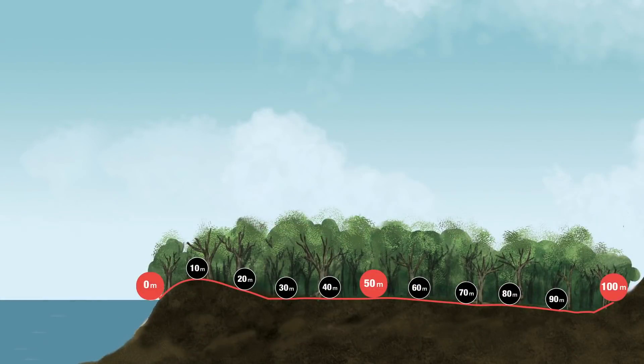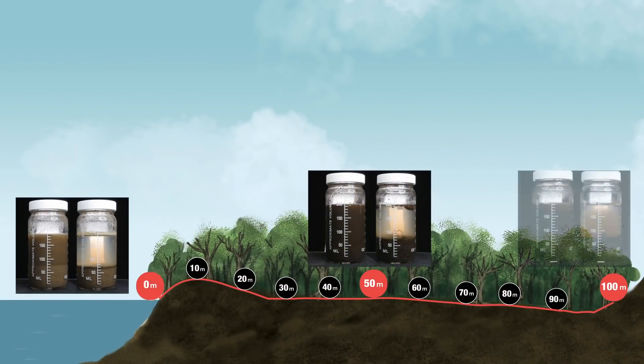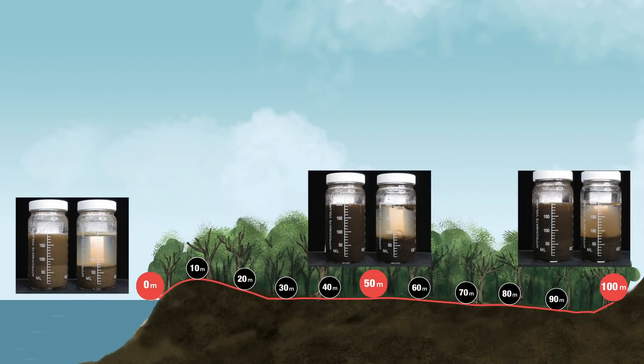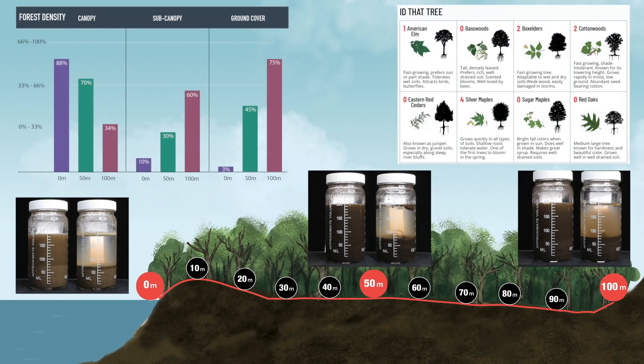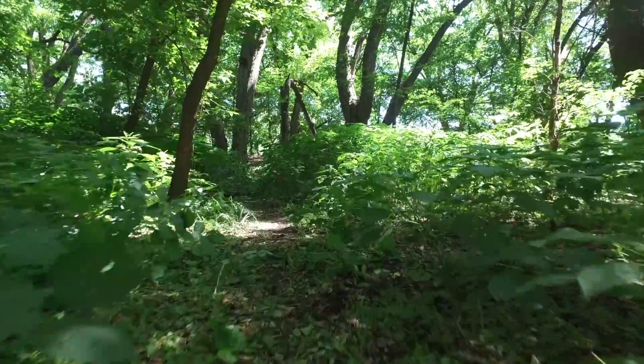Finally, we'll compare observations from the three transect points and see what explanations we can come up with that account for the changes we observed along the transect line.